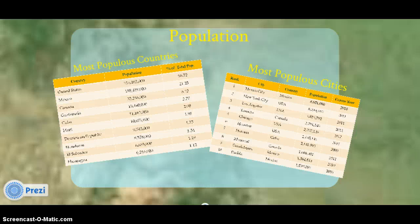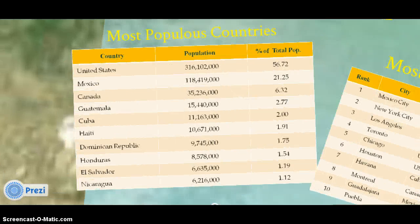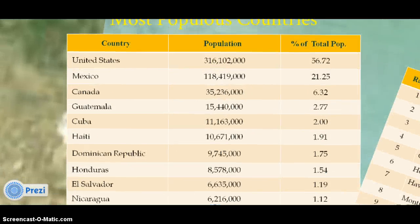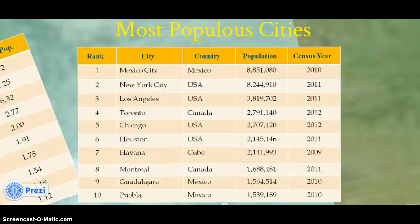This chart depicts the most populated countries and cities. The most populated country is the United States, with 56% of North America's total population, followed closely by Mexico and Canada. Surprisingly, Mexico City is the most populated city within North America, followed by New York City, Los Angeles, and Toronto, Canada.